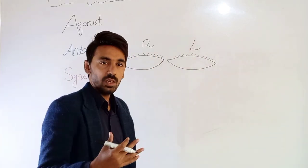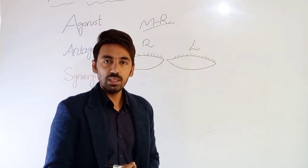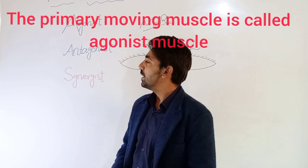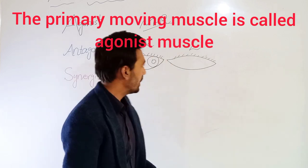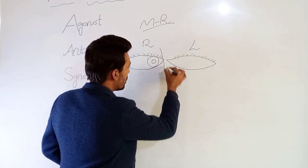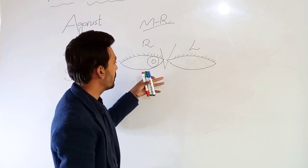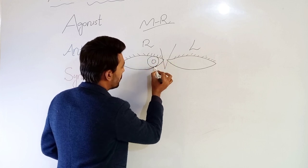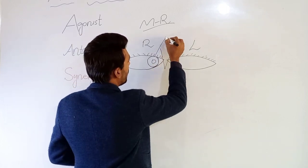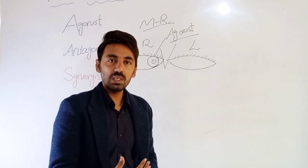For example, if we consider our medial rectus muscle as our primary muscle — you know that the function of the medial rectus muscle is to keep the eye towards the nose. If this is your beautiful nose, the function of the medial rectus would be moving the eye in the medial direction towards the nose. So the primary moving muscle is called the agonist muscle.